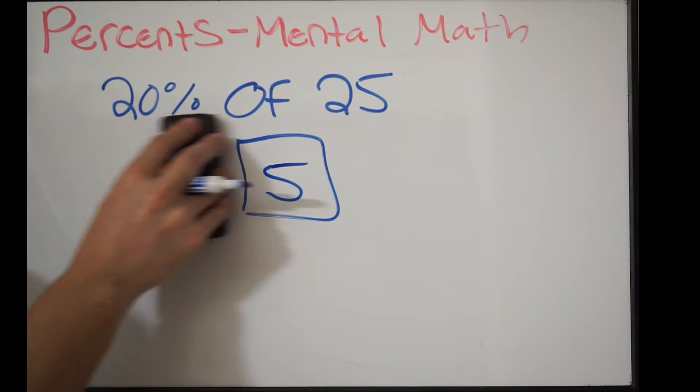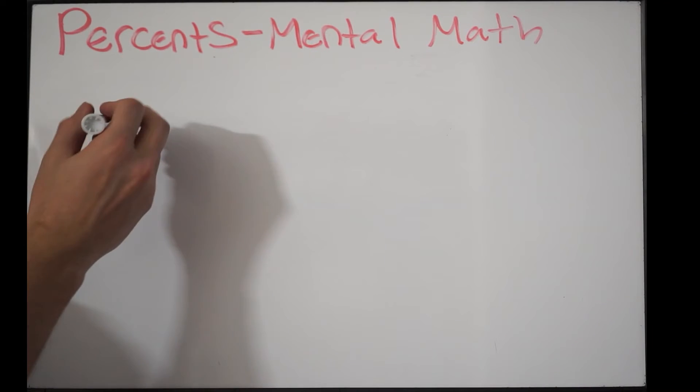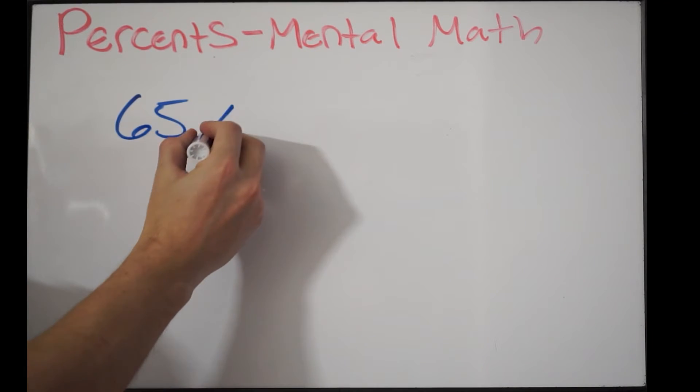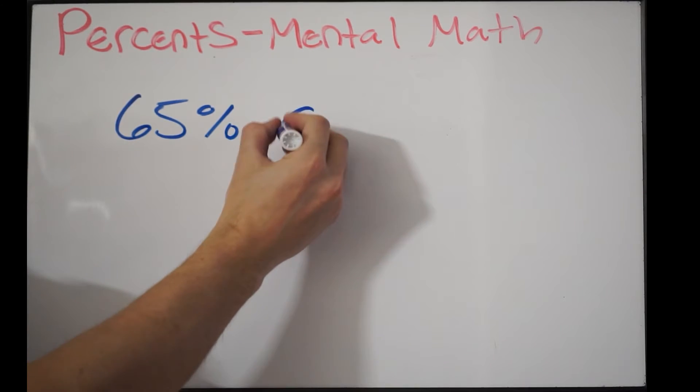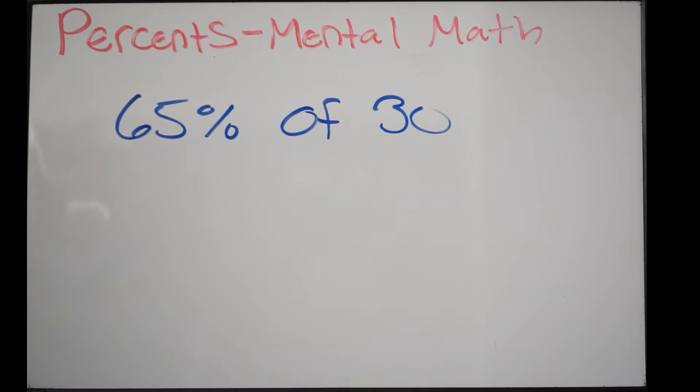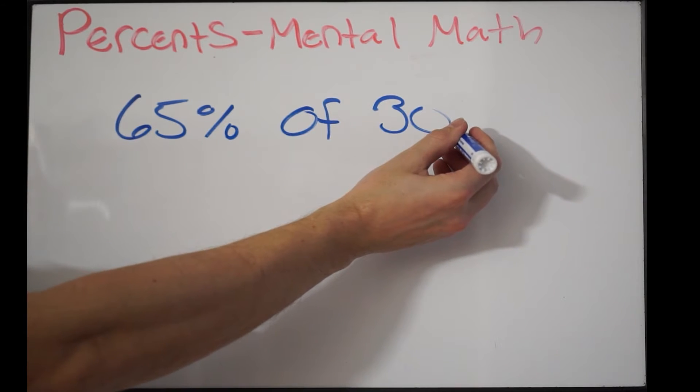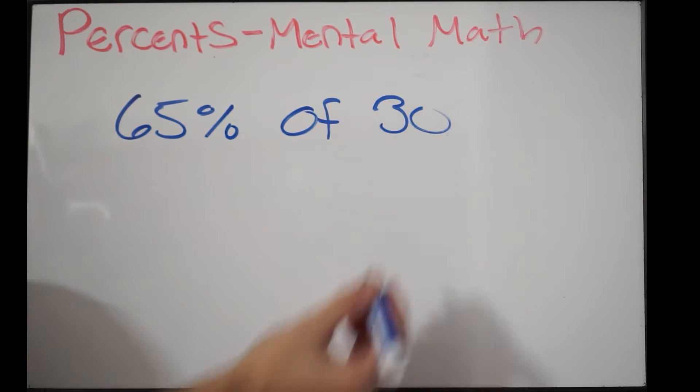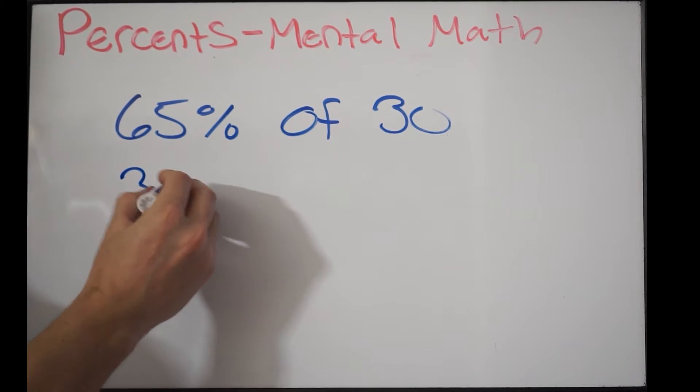Let's try another example. Here we have 65% of 30. Like before, let's first find 10%. All I'm going to do is take this decimal point and move it one place over to the left. That's going to give me 3, or 3.0.